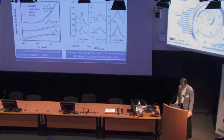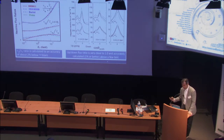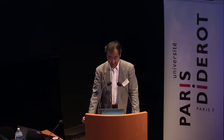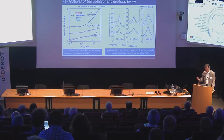Also, I would like to remind you about the zenith angle distribution, calculated for three different energy ranges: 0.3 to 0.5 GeV, 0.9 to 1.5 GeV, and 3 to 5 GeV. You realize that the up-down ratio is very close to 1 and accurately calculated above a few GeV. These features have been very useful to the discovery of neutrino oscillations and for the studies of neutrino oscillations.